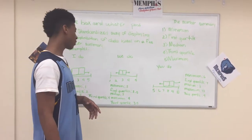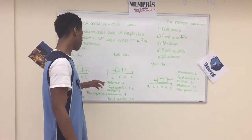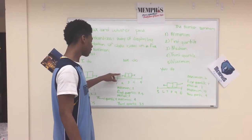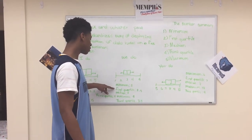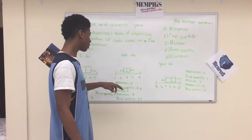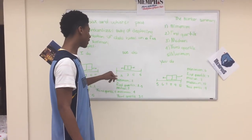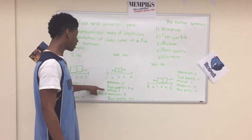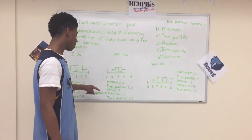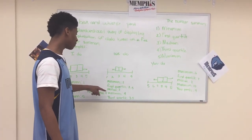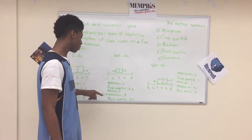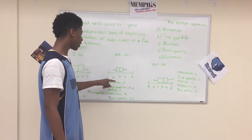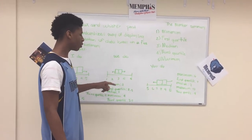Now we're going to do this next problem. My minimum is two because this is the lowest point. The first quartile is 2.5 because it lands between the two and the three. My median is three. My maximum is four. My third quartile is 3.5 because it lands between the three and the four.